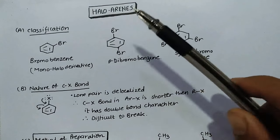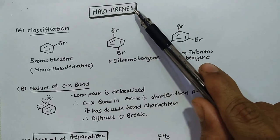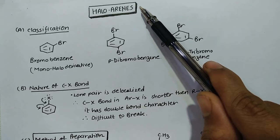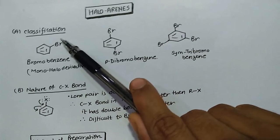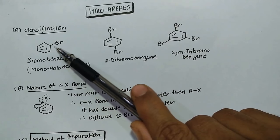Hello students, the topic that we will be discussing now is halo arenes. Halo arenes means that the halogen group is connected to the aromatic ring. As you can see, in bromobenzene, bromo is a halo group which is connected to the aromatic ring benzene. So this is halo arenes.